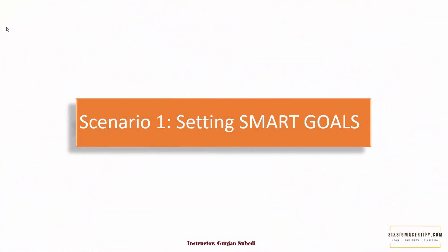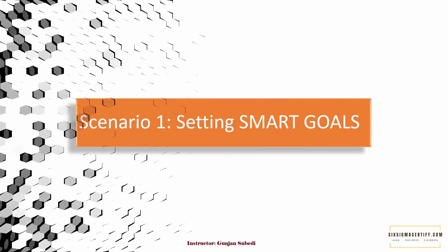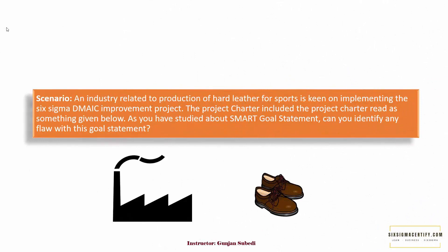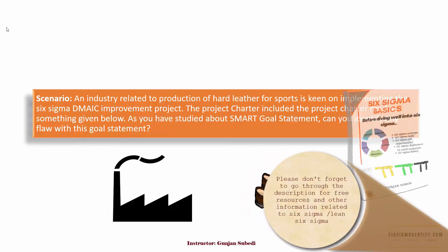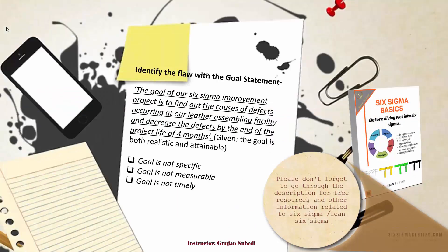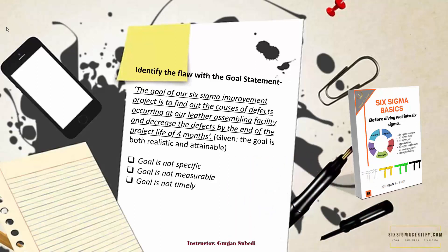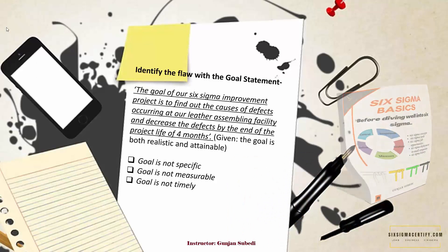Scenario 1 is related to setting SMART goals. The scenario is: an industry related to the production of hard leather for sports shoes is keen on implementing a Six Sigma DMAIC improvement project. The project charter included the following goal statement. As you have studied about the SMART goal statement, can you identify any flaw with this goal statement? The goal statement given is: the goal of our Six Sigma improvement project is to find out the causes of defects occurring at our leather assembling factory and decrease the defects by the end of the project life of four months.